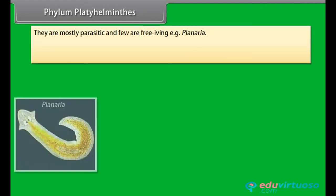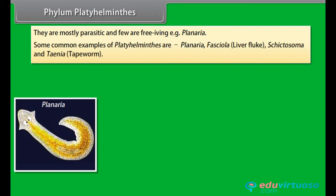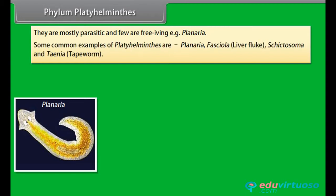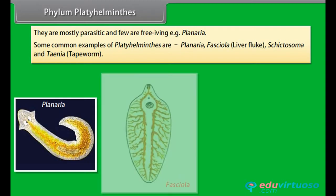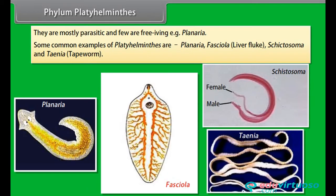They are mostly parasitic, and few are free-living, example Planaria. Some common examples of Platyhelminthus are Planaria, Fasciola, liver fluke, Schistosoma, and Taenia, tapeworm.